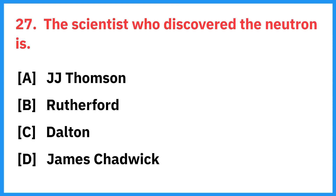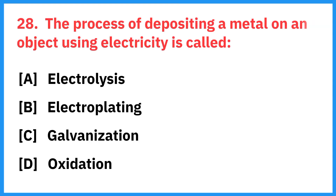The scientist who discovered the neutron is? Right answer is James Chadwick. The process of depositing a metal on an object using electricity is called? Right answer is electroplating.